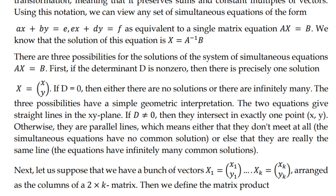We have a bunch of vectors: x1, y1; x2, y2; and so on — xk is (xk, yk). We have a 2 by k matrix. The product gives first row elements ax1 + by1, ax2 + by2, ..., axk + byk, and second row cx1 + dy1, cx2 + dy2, ..., cxk + dyk.